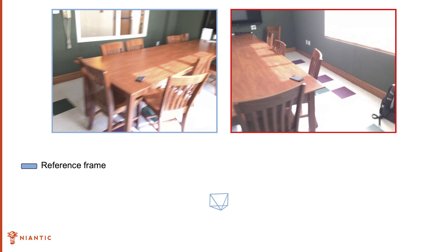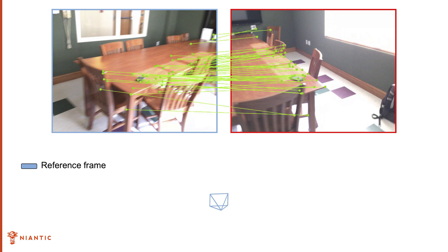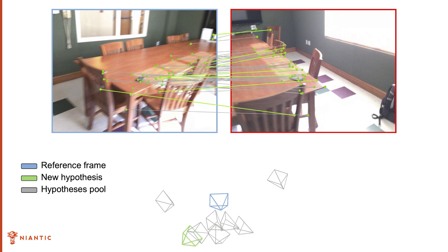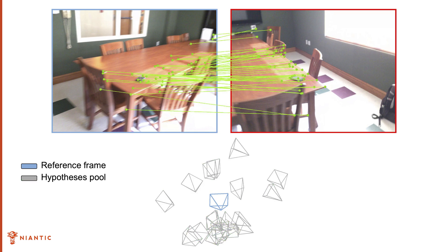In the traditional pipeline, we first estimate correspondences. A minimal set of correspondences is sampled and a camera pose hypothesis is generated. This operation is repeated hundreds of times to generate a pool of hypotheses. Classical RANSAC-like methods use inlier counting to select the best hypothesis.